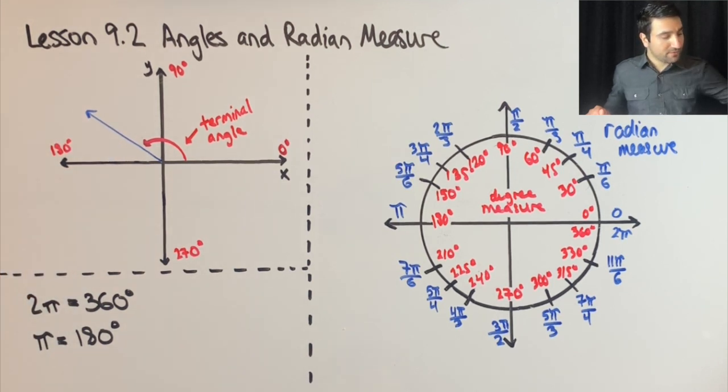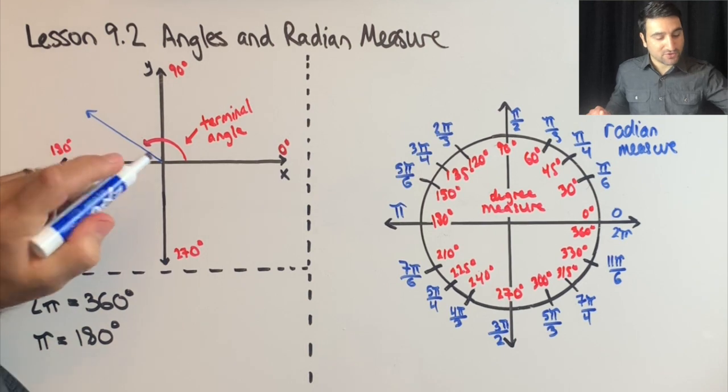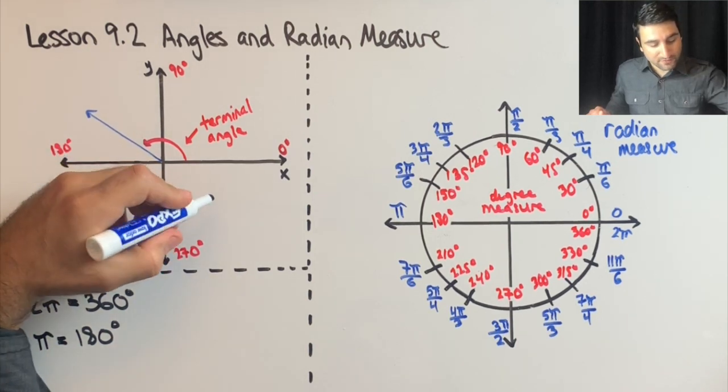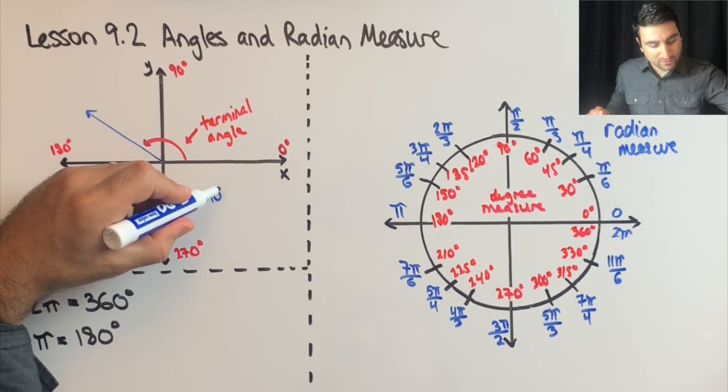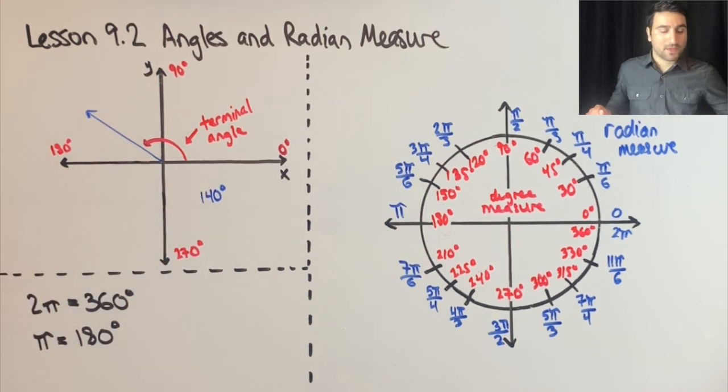So if this angle measure here was 150, let's say 140 degrees. You see, if you had an angle measure of 500 degrees, what would that angle look like?